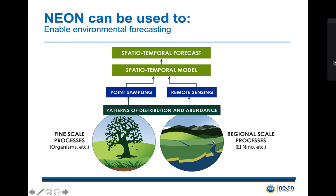NEON data can also be used to enable environmental forecasting to better understand the key attributes and trajectories of fine-scale and regional-scale ecological processes. Ecological forecasting using NEON data can be used to answer questions such as how will ecosystems change in the near future and how do human decisions affect these outcomes?